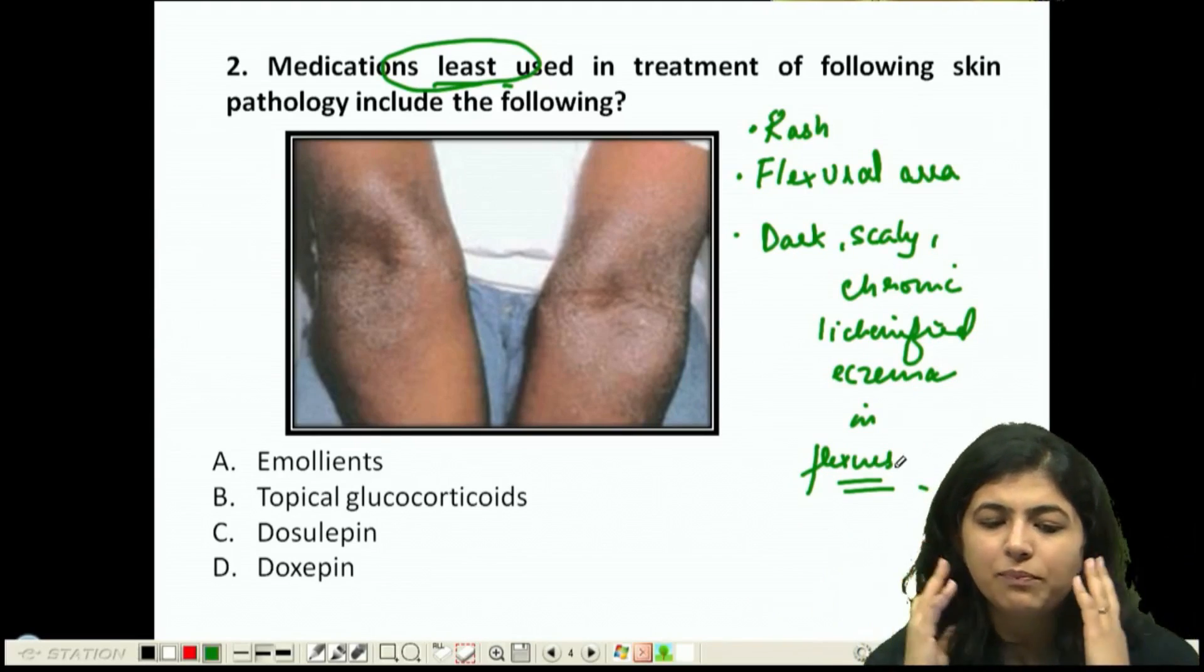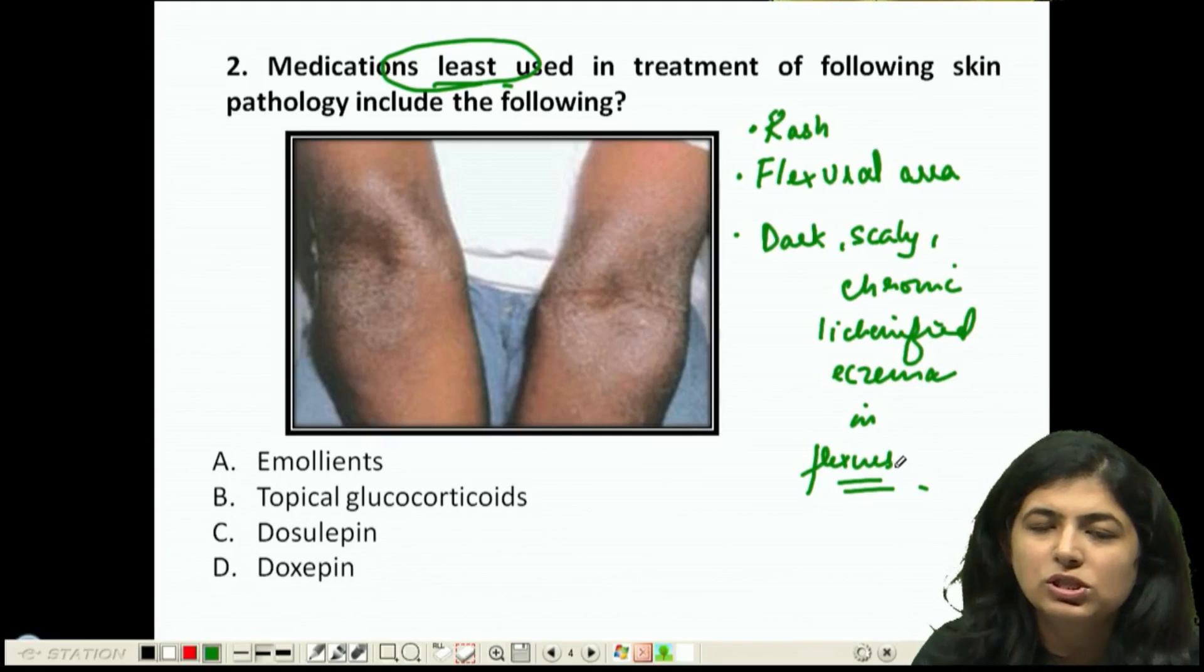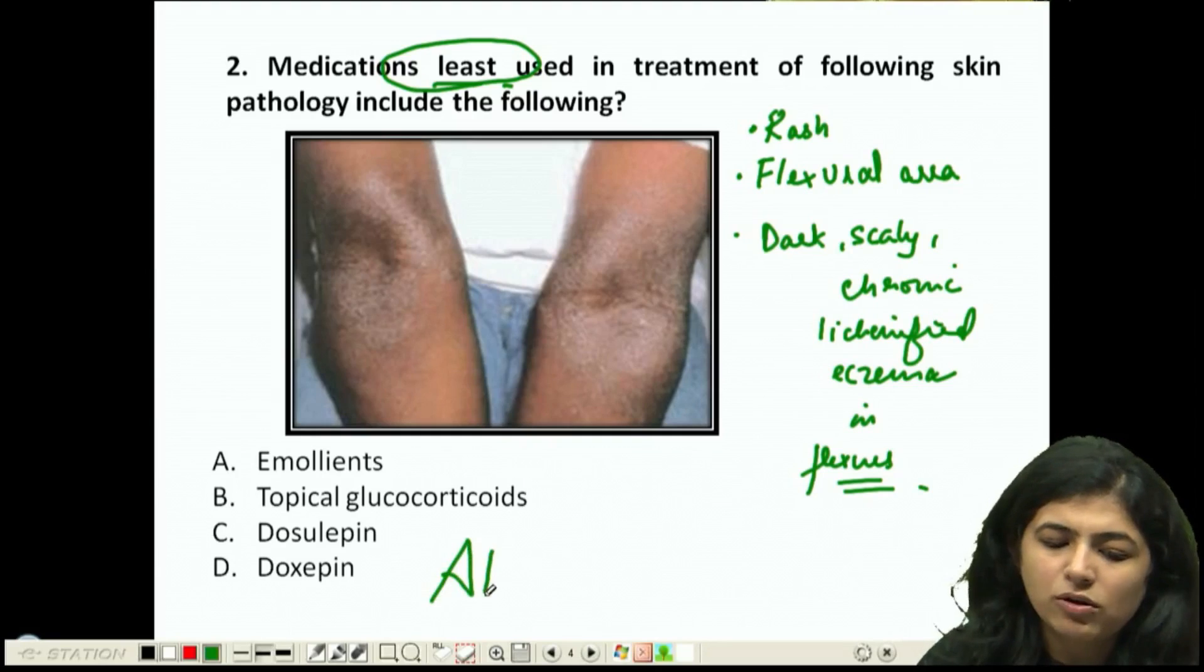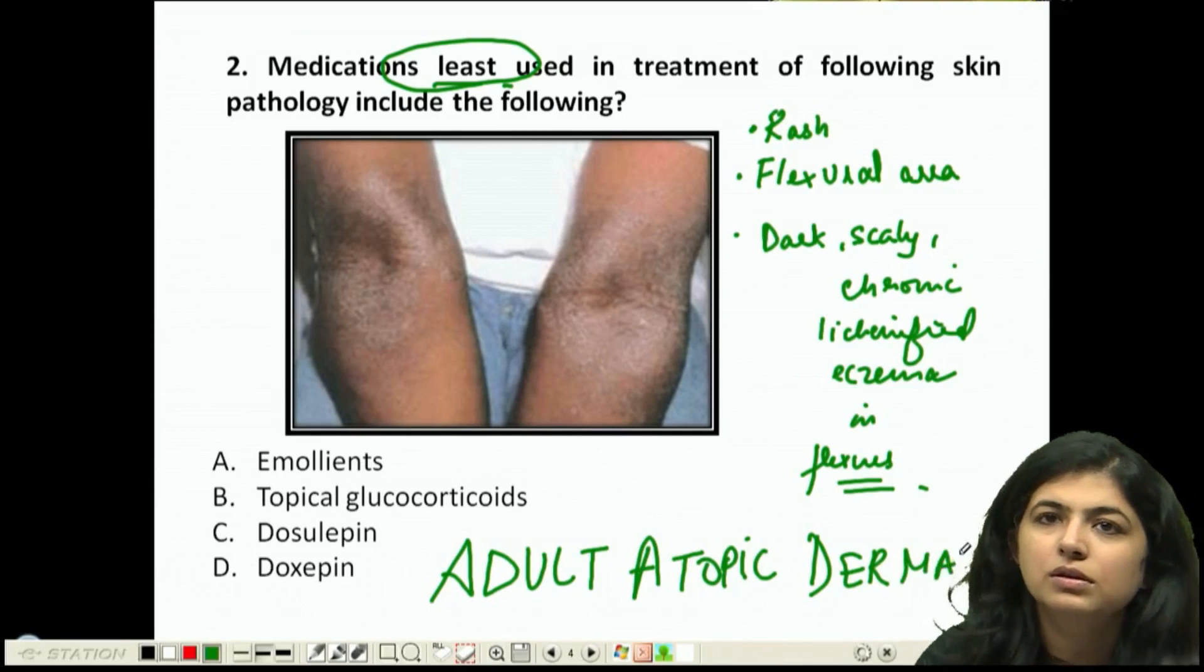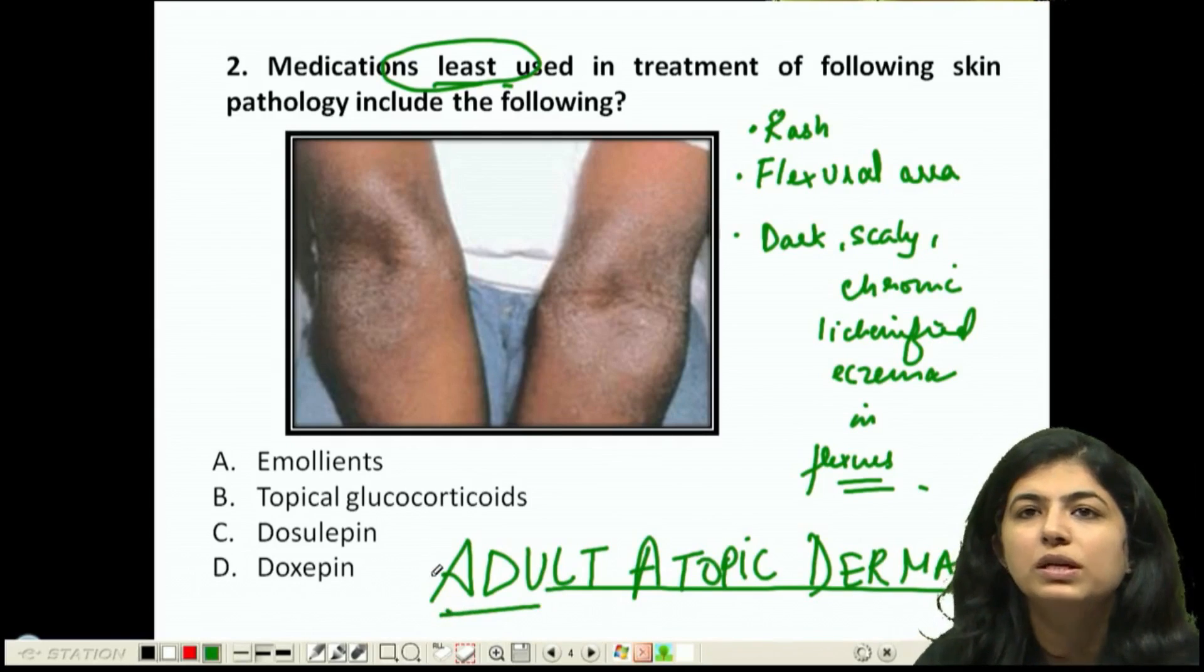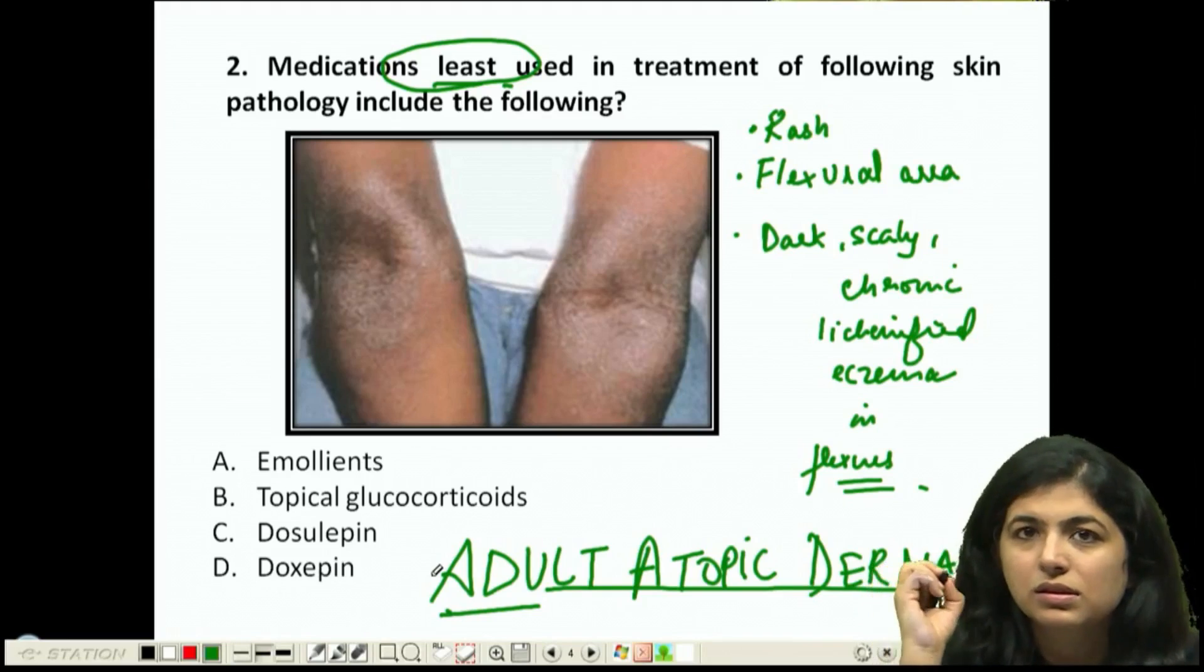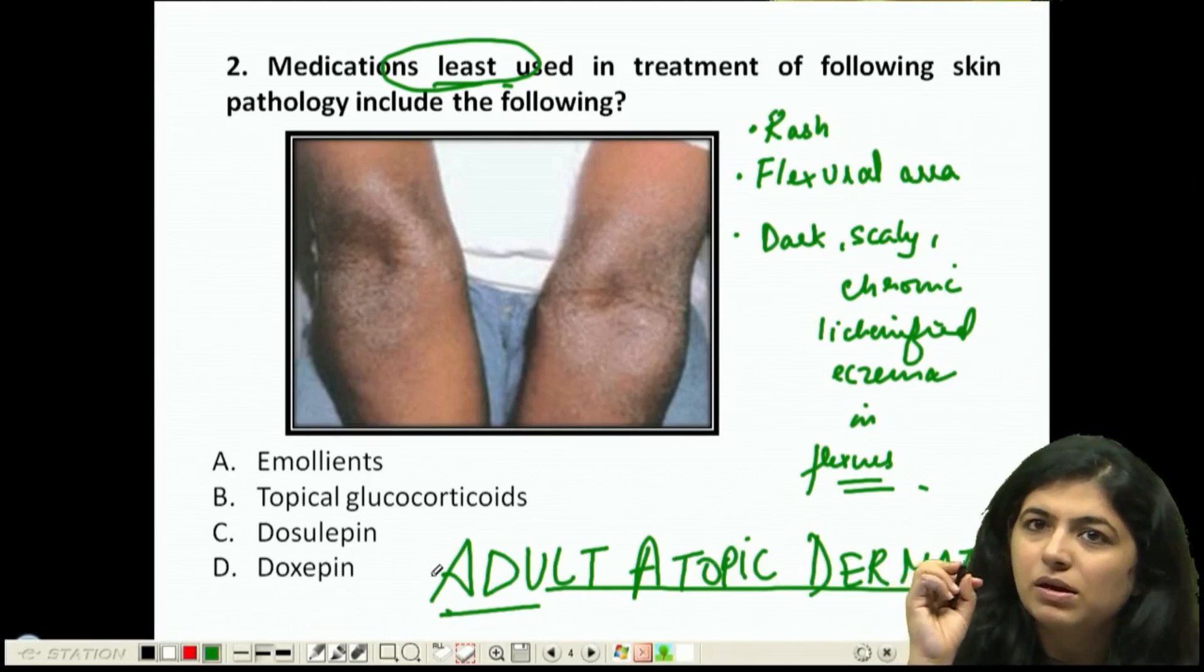The only thing we read at this level for flexural chronic lichenified eczema - the diagnosis without any doubt is adult atopic dermatitis. There is absolutely no doubt that it is adult atopic dermatitis.